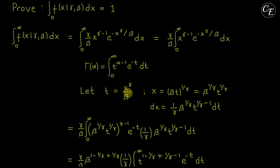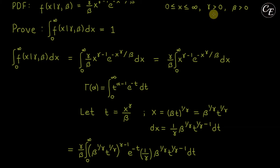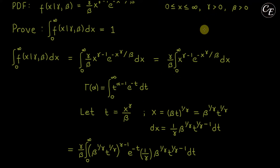For the limits: when x is 0, we have 0 raised to a positive constant over a positive constant, which is still 0, so t equals 0 when x equals 0. When x is infinity, we have infinity raised to a positive constant over a positive constant, which is still infinity, so t equals infinity when x equals infinity. The limits of integration remain 0 to infinity.